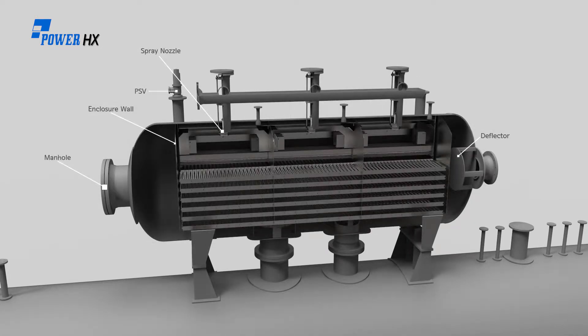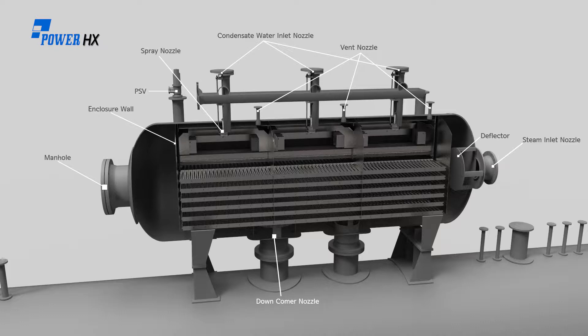The de-aerator consists of the following: steam inlet nozzle, water inlet nozzle, vent nozzle, downcomer nozzle, and equalizer nozzle.